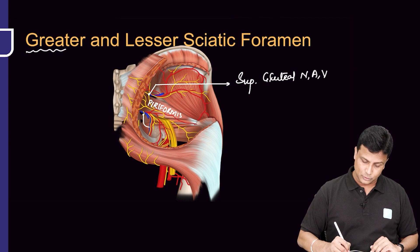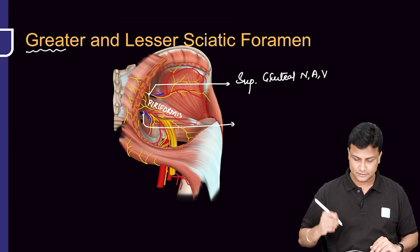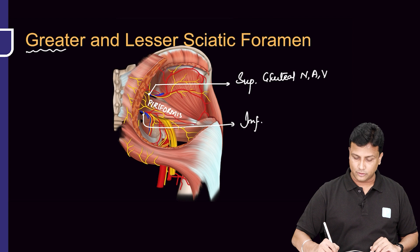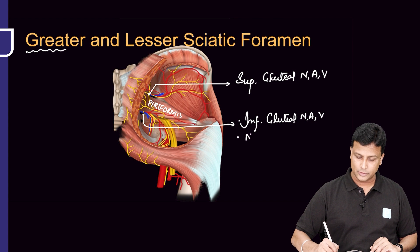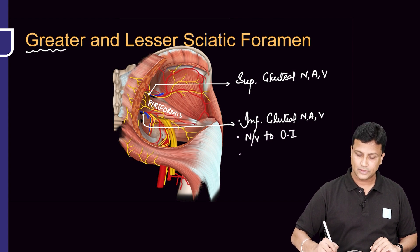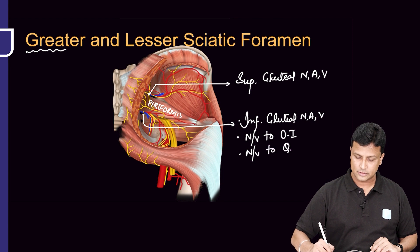Now what about the structures passing below the piriformis? Everything else passes below. Below the piriformis you will have inferior gluteal nerve, inferior gluteal artery and vein. What else is required in the gluteal region? Nerve to obturator internus, and then nerve to quadratus femoris.